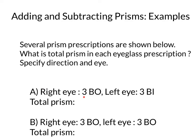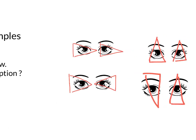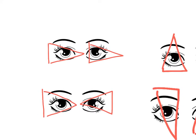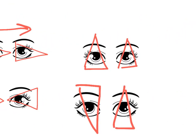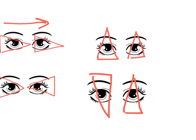Before we begin, I want to remind you that when you subtract prisms, the prisms are facing in the same direction or pointing in the same direction. So here, for example, you subtract them because they're pointing in the same direction — they're all pointing towards your right. And here you add them because the prisms are pointing in opposite directions. Similarly, with the vertical prisms, here you subtract them, and here you add them because they're pointing in opposite directions. When they're pointing in the same direction, you subtract them.